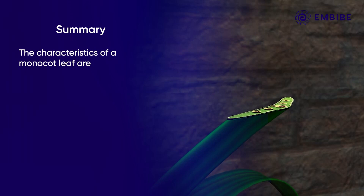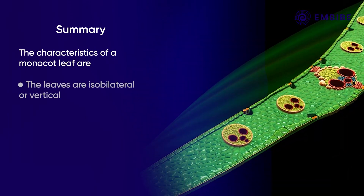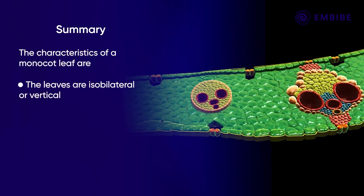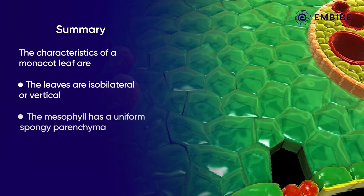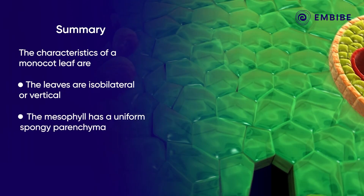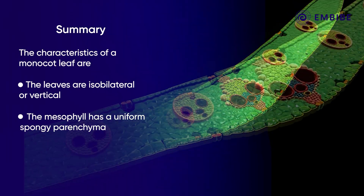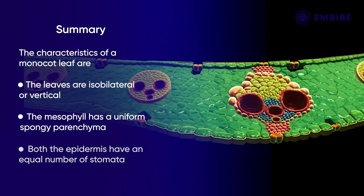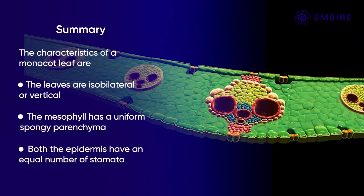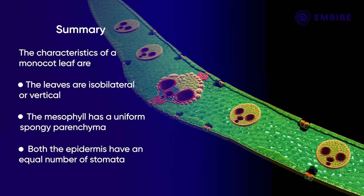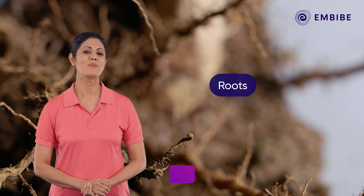To summarize, the characteristics of a maize leaf or a monocot leaf are: the monocot leaf is isobilateral or vertical; in monocots, the mesophyll has a uniform spongy parenchyma; and the sectional view of a monocot leaf shows an equal number of stomata on both the epidermis.